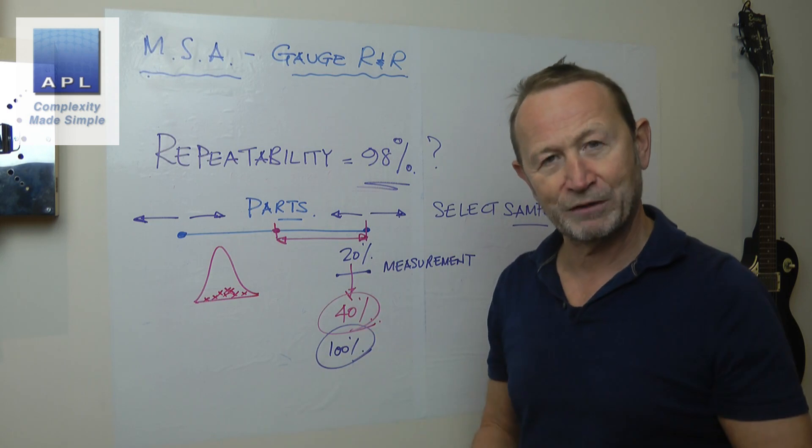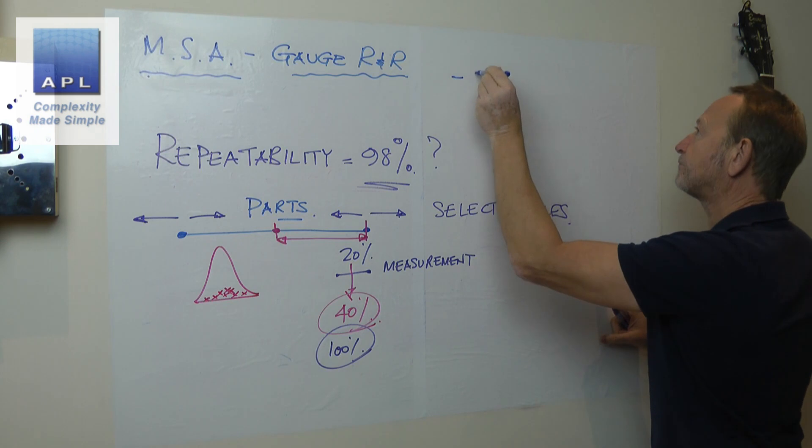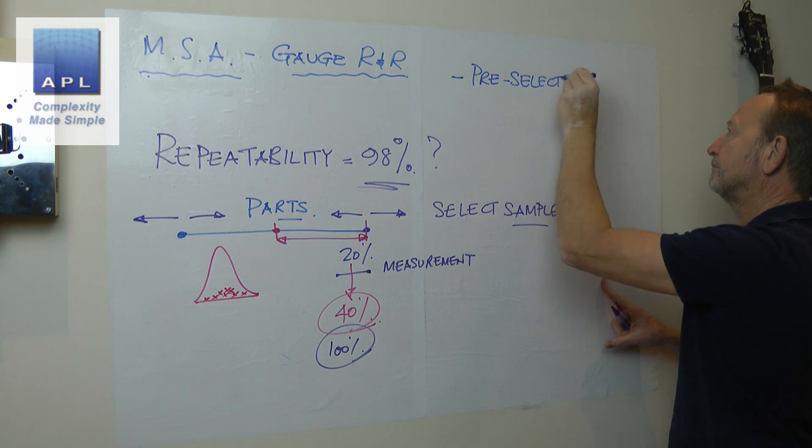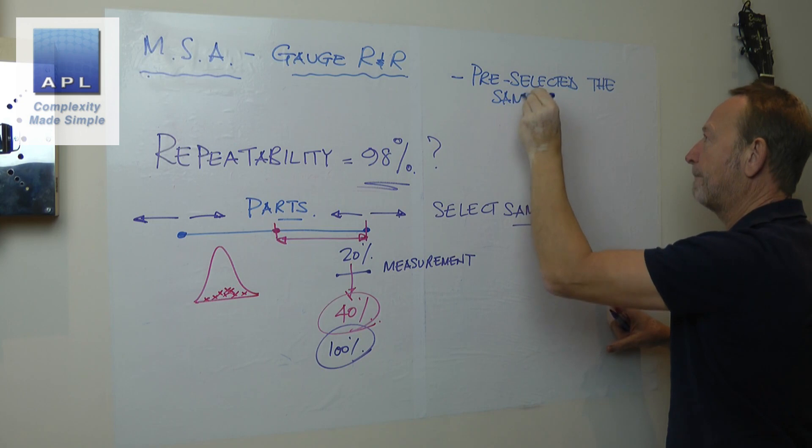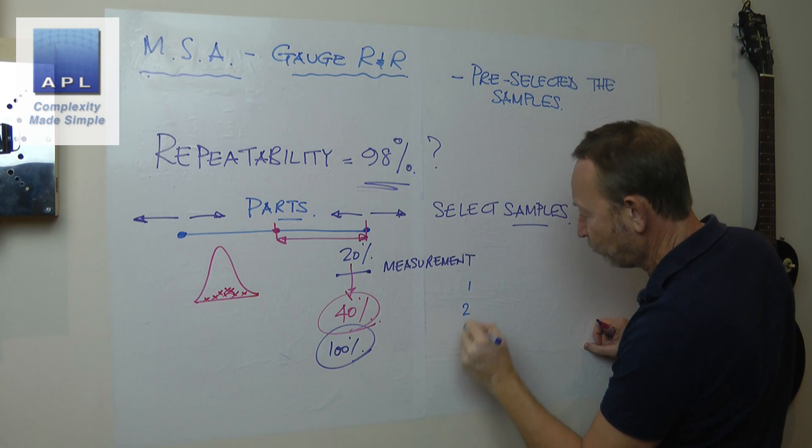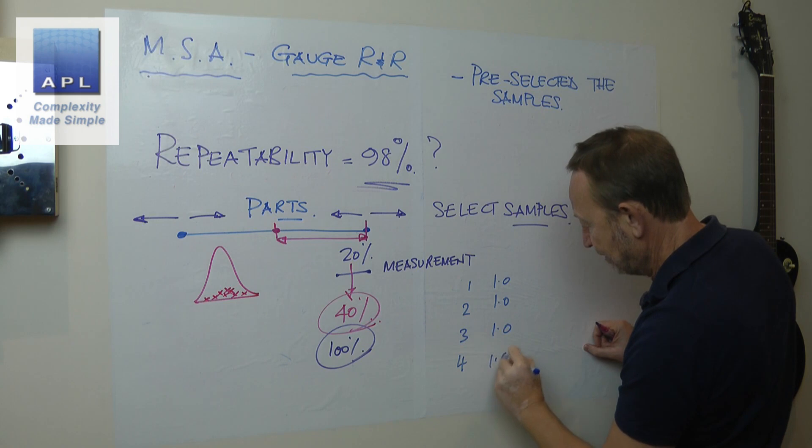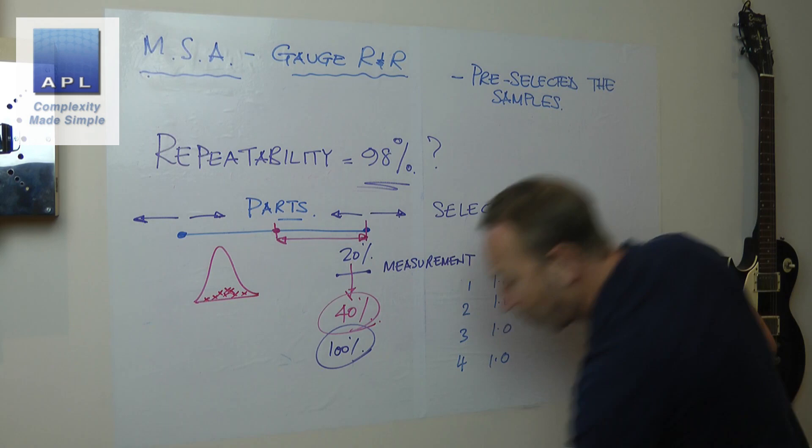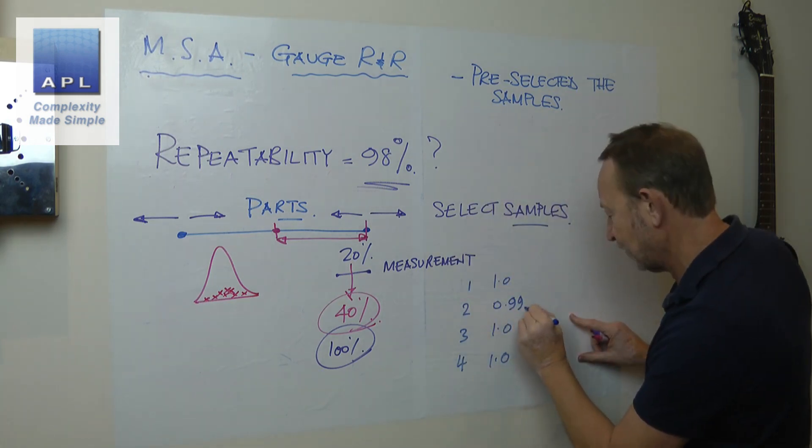So what are the two potential problems that Imad could be suffering from? The first one is that he sort of pre-selected the samples. So most of those results, you know, for part one, two, three, four, seem to be landing at one. Now, he's not actually put a decimal place on there. But when he gets a different number to one, what we're seeing is 0.99.